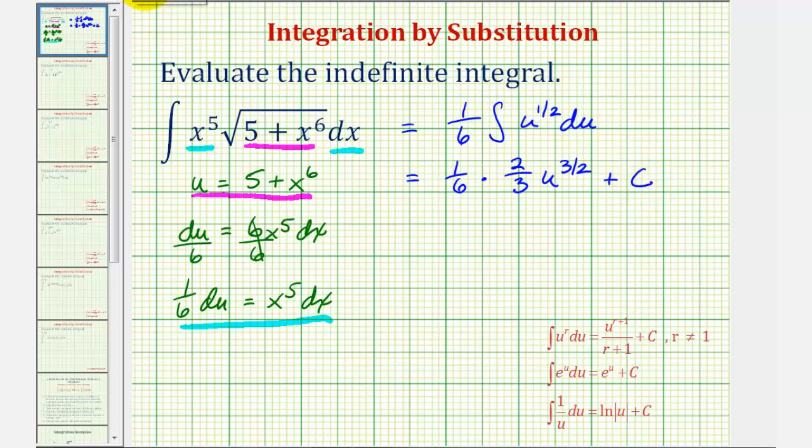Next we'll simplify this product. There's one, two, and two, and three twos and sixths. So now we have one-ninth, u to the three-halves.